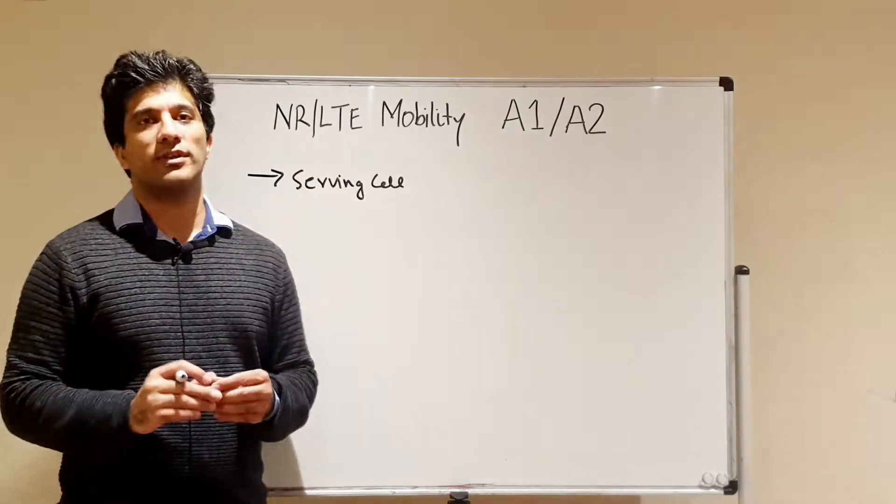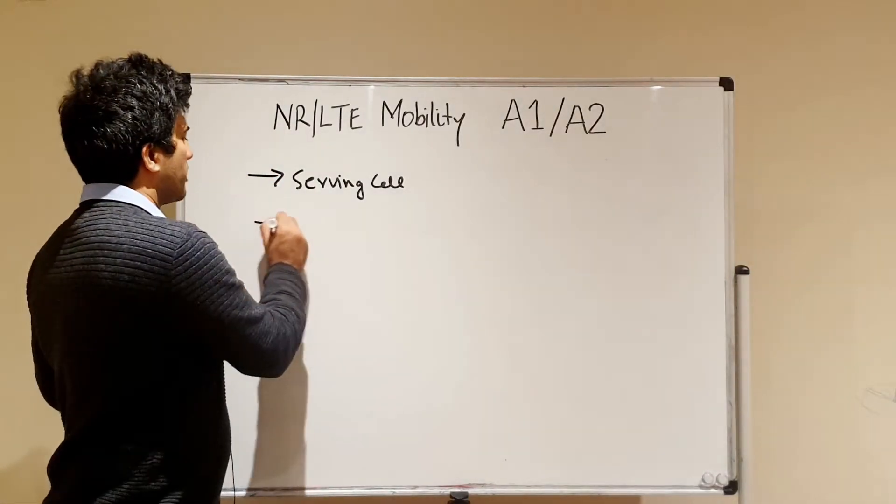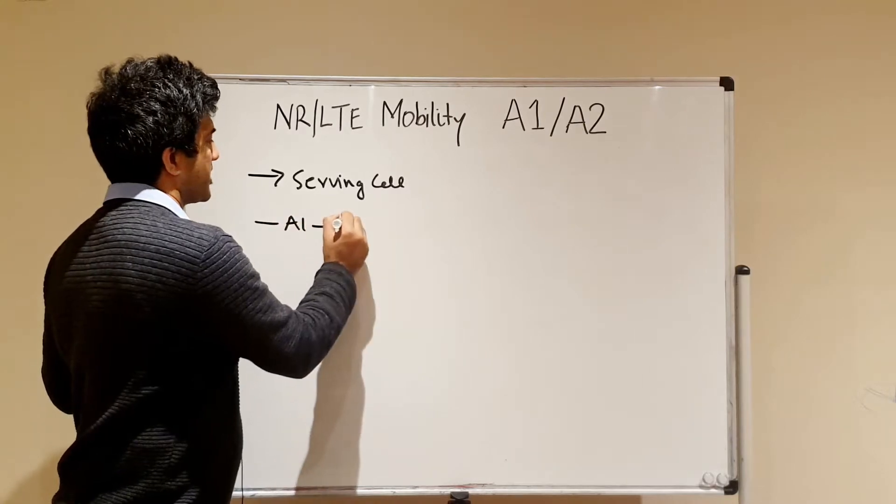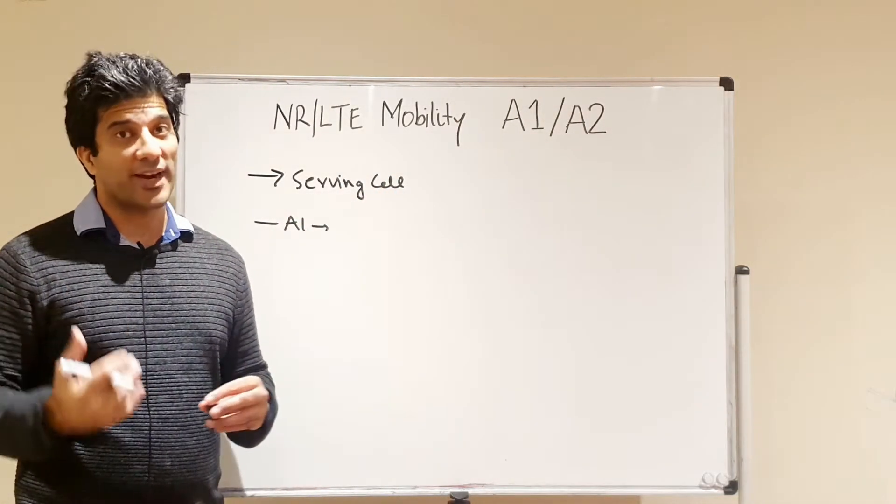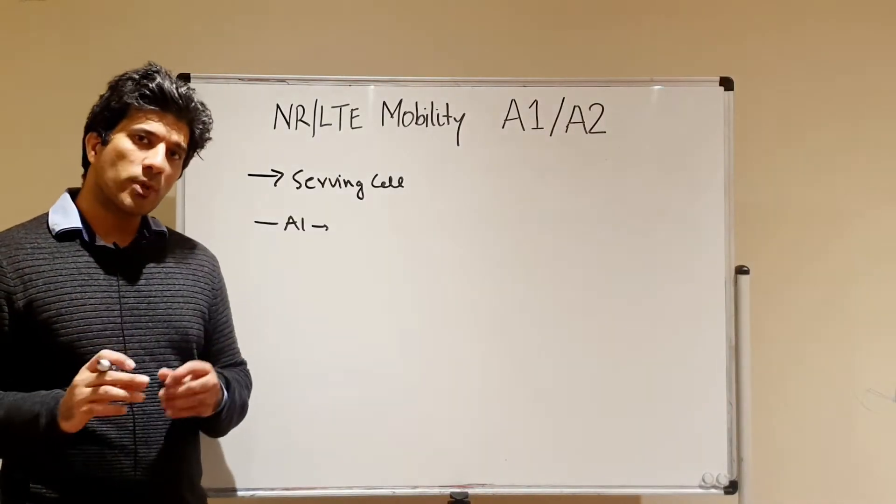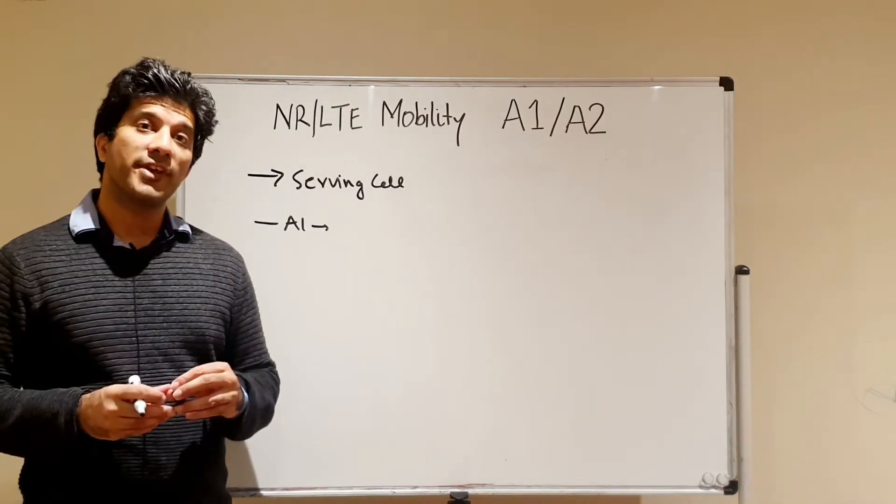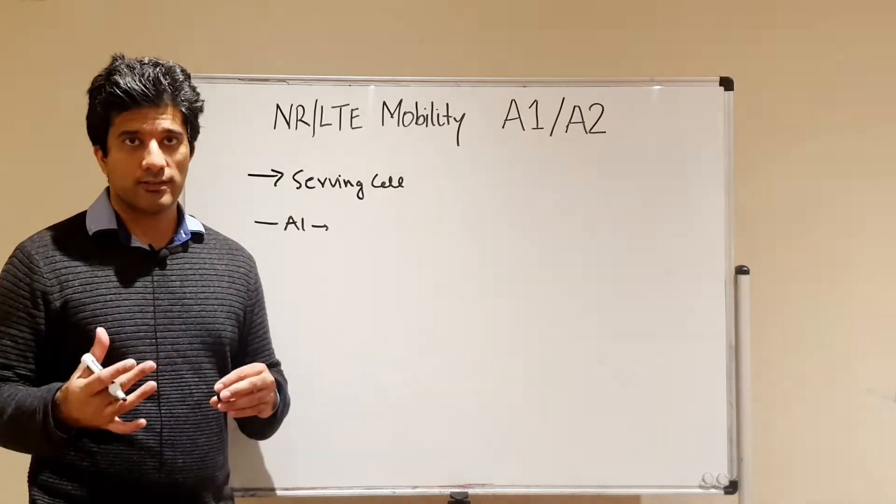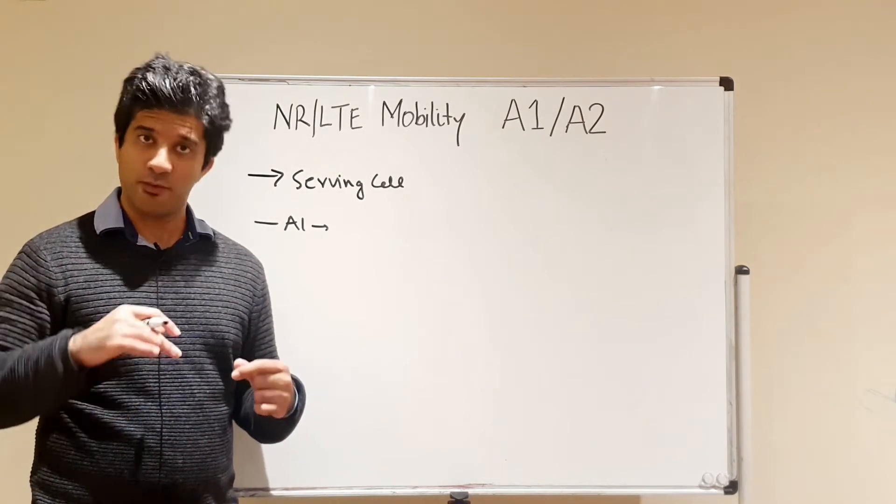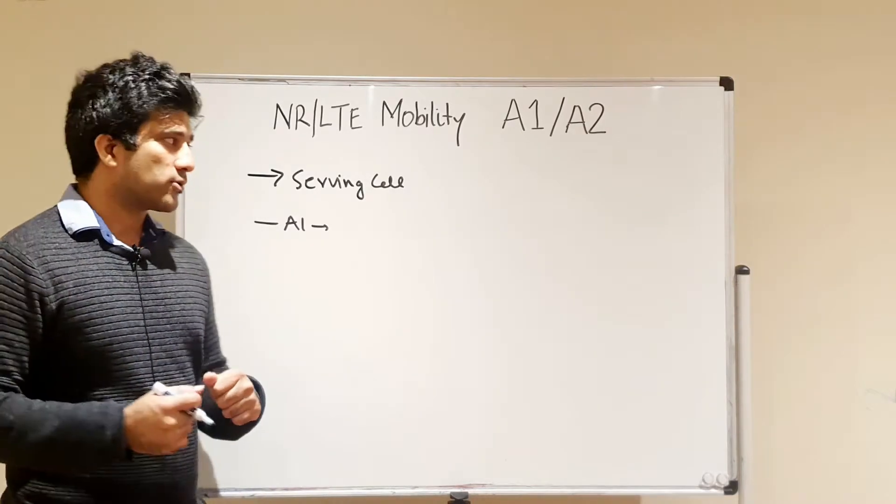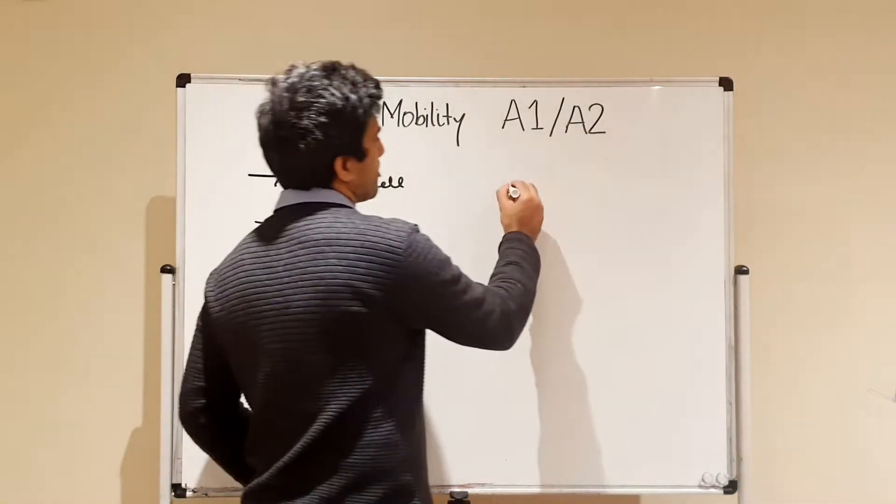The event is related around the serving cell. So the A1 threshold is basically when your serving cell becomes better than a particular threshold. The question will come into your mind: why would we have a threshold that basically describes our serving cell becoming better than a certain value? The concept behind is the measurement reports.